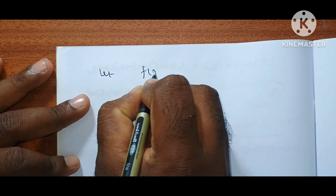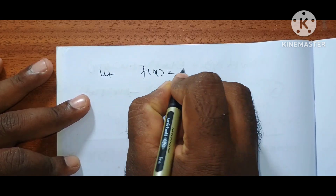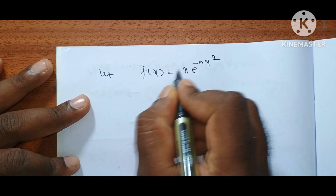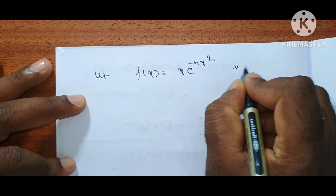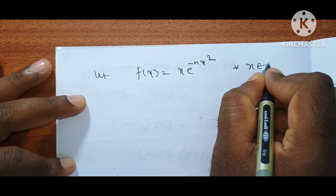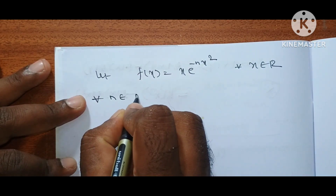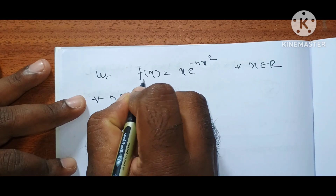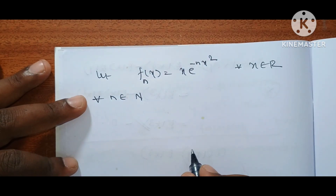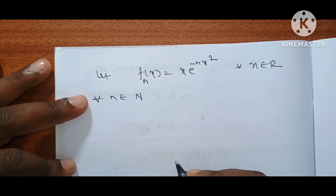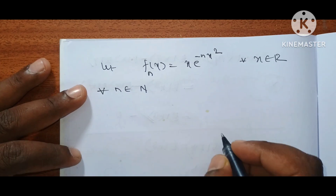Let f_n of x be a sequence of functions defined as f_n(x) = x·e^(-n·x²) for every x belonging to R and for every n belonging to the natural numbers.